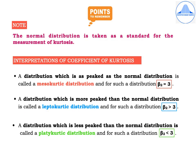Some important points to remember: the normal distribution is taken as a standard for the measurement of kurtosis. A distribution as peaked as the normal is called mesocurtic, with β2 equal to 3. A distribution more peaked than normal is leptocurtic, with β2 greater than 3. A distribution less peaked than normal is platycurtic, with β2 less than 3.